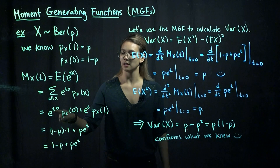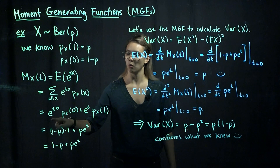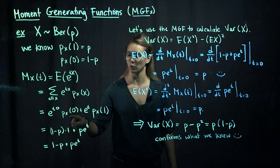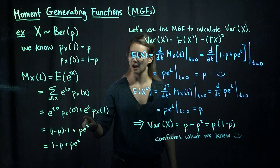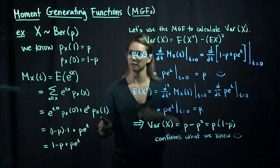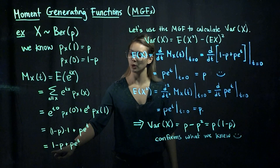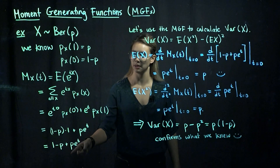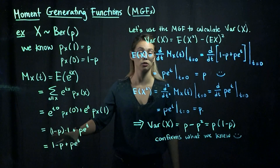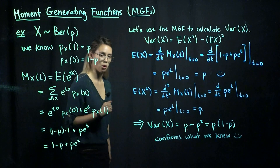We already know the PMF evaluated at 0 gives 1 minus p, and at 1 gives p. And of course, e to the t times 0 is just 1. So we end up with 1 minus p plus p e to the t. This is our MGF, which we'll take derivatives of and evaluate at t equals 0 in order to get moments.